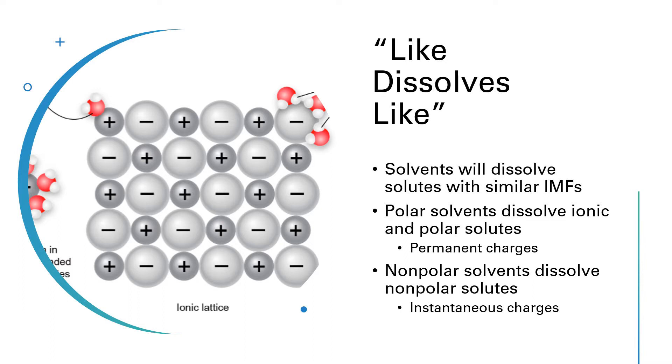So those instantaneous dipoles exist for just a brief moment and then they disappear as the electron distribution goes back to being random. So the bottom line is we say polar solvents dissolve polar solutes and we lump ionic in with that group. And nonpolar solutes will dissolve nonpolar solutes.